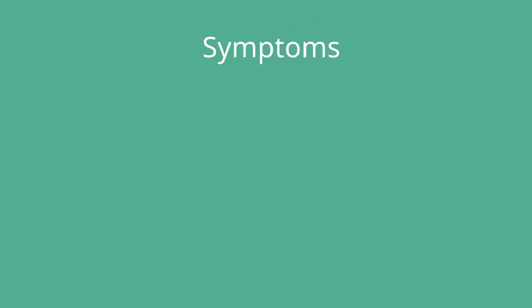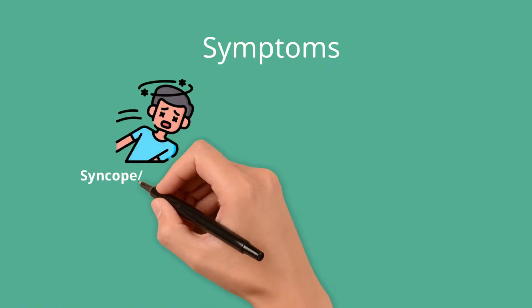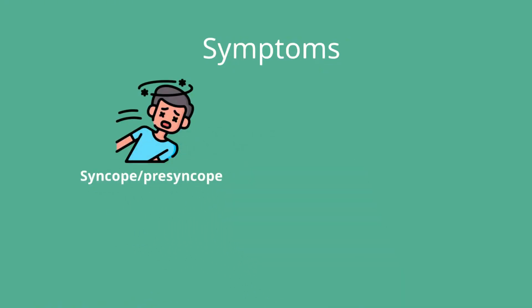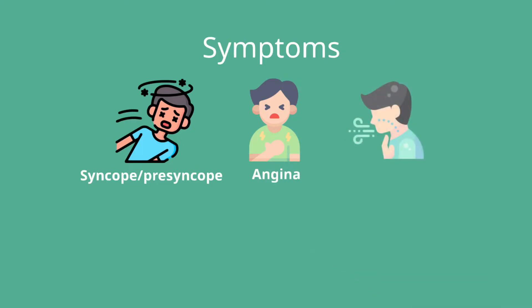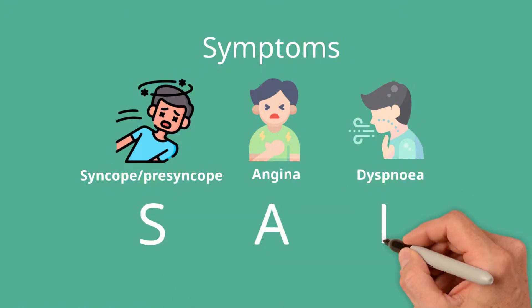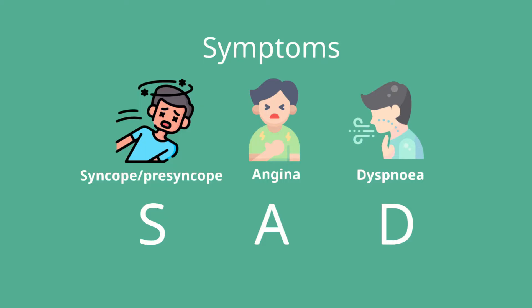Aortic stenosis is usually asymptomatic until it's severe in nature. At this point, it can cause three main symptoms: syncope or presyncope on exertion due to an inability of the heart to sufficiently increase cardiac output in a vasodilated state; exertional anginal chest pain due to increased myocardial oxygen demand; and shortness of breath due to both LV pressure overload and heart failure. The triad of symptomatic aortic stenosis can be remembered by the mnemonic SAD — syncope, angina, dyspnea. Any of these symptoms should prompt urgent referral for assessment and intervention.